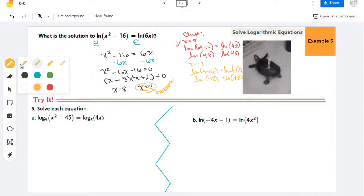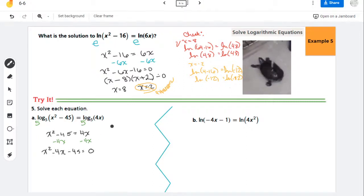So let's go ahead and let's try it again. So my first step, I'm going to exponentiate. Now notice, this is a log base 5. So the base of the exponent I'm using here is 5, because that's what cancels out with this type of logarithm. So I have x² - 45 = 4x. I have a quadratic term and a linear term, so I need to move everything onto the same side of the equal sign.